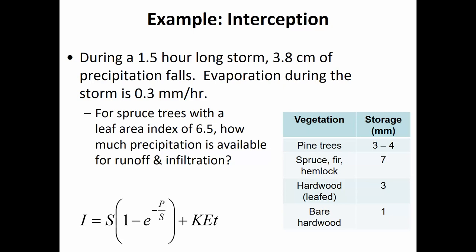Are there any questions about the example? Keep in mind this is just an empirical equation doing its best to represent what's observed, so it won't always behave exactly this way. But it's a method for predicting the effect of interception. Rainfall and rainfall excess aren't always the same thing — interception can have a pretty big effect, especially when precipitation quantity is relatively low.